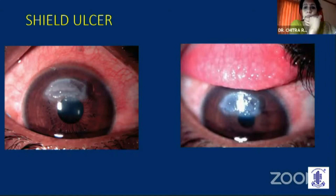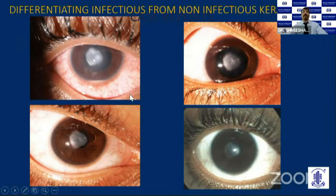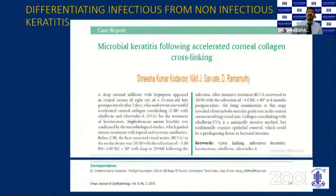Coming to a few of our experiences: this particular patient is a case of accelerated keratoconus who had accelerated CXL performed. After three days, he came back with an ulcer right in the center of the cornea. Culture sensitivity revealed a Staphylococcal ulcer, and he was treated with fourth-generation moxifloxacin. We started steroids after a week, and the patient responded well. Visual acuity improved to 6/12, even though the ulcer was in the center of the cornea. This was the first reported case of microbial keratitis following accelerated CXL, published in OJO from our institute.